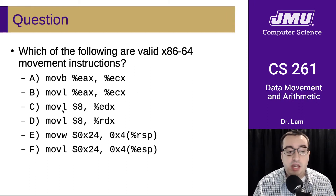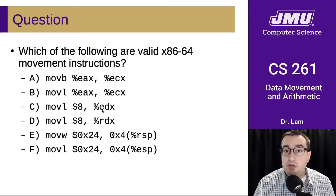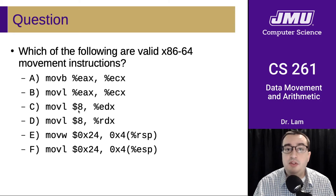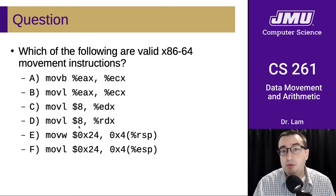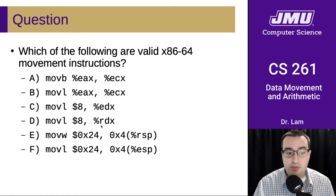Here we're doing a 32-bit move from an immediate to a 32-bit register operand, so that's okay. Even if the value is not stored as 32 bits in the instruction, it will get extended to 32 bits to be saved in the register. The next one is a 32-bit move from immediate 8 to a 64-bit register. This is invalid because the register operand does not match the instruction suffix.